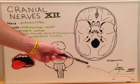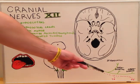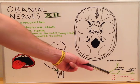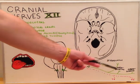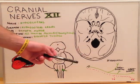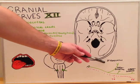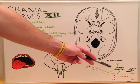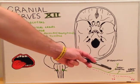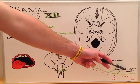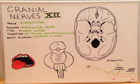These muscles include the styloglossus, the hyoglossus, as well as the genioglossus, which makes up the bulk of the tongue muscles.